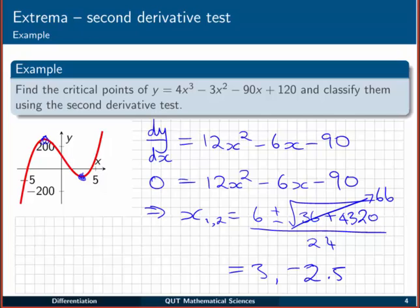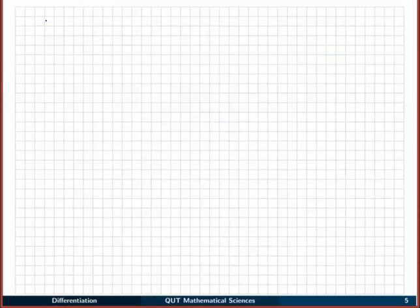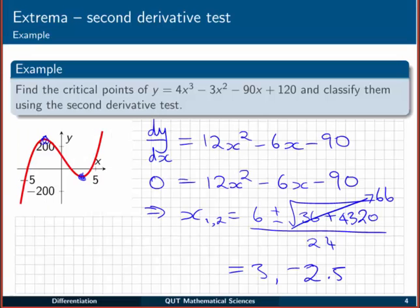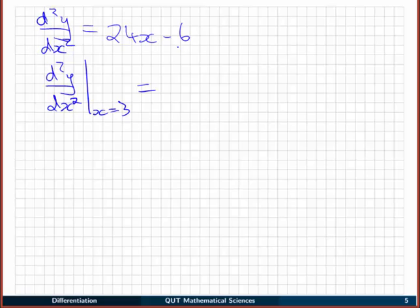Let's classify those using the second derivative test. The second derivative is d²y/dx² = 24x - 6. We evaluate that at the first critical point, x = 3. We get 24×3 = 72, minus 6 is 66. That's greater than 0, so at x = 3 we have a minimum.